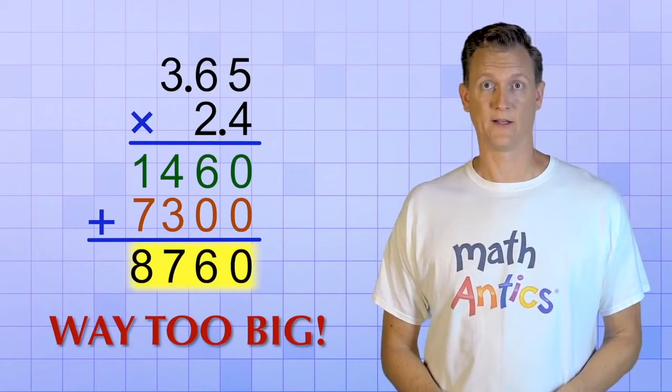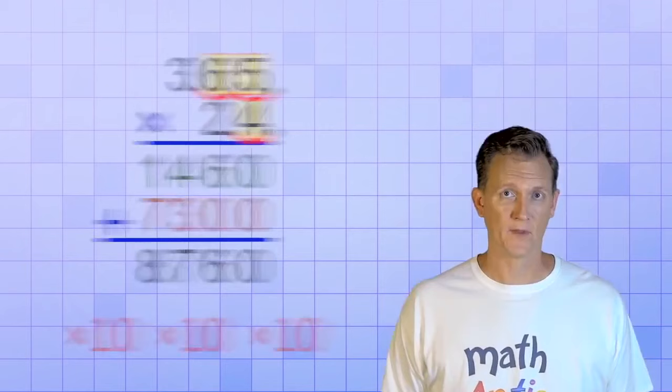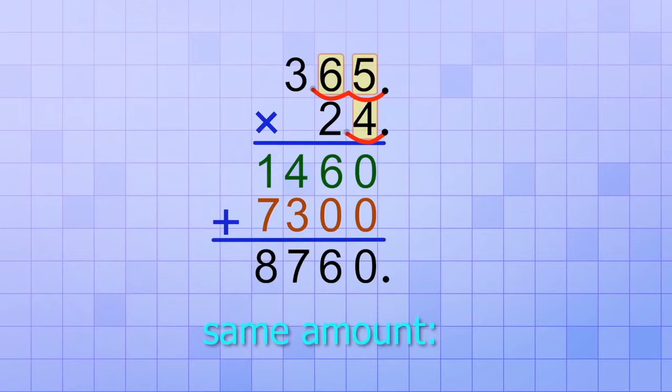And that means the answer we got is way too big. It's too big by three factors of 10, because the decimal points in our problem got shifted a total of three places to the right. Two on the top and one on the bottom. So to fix that,